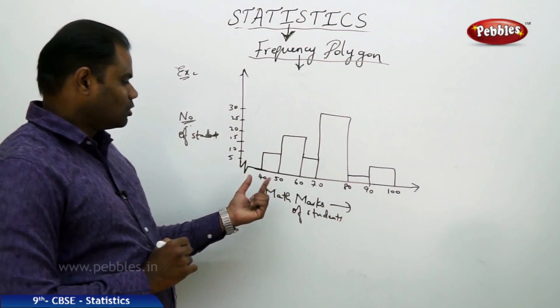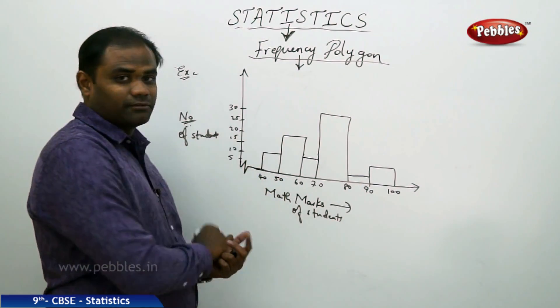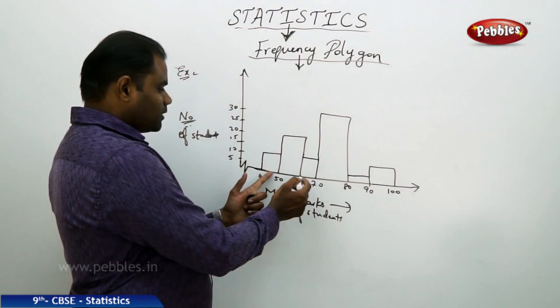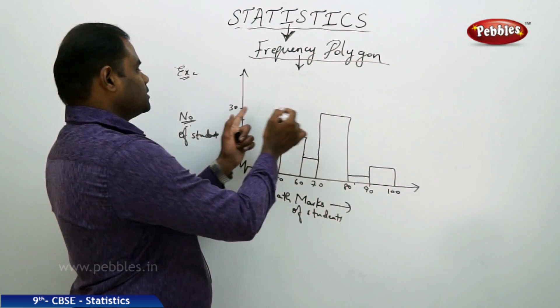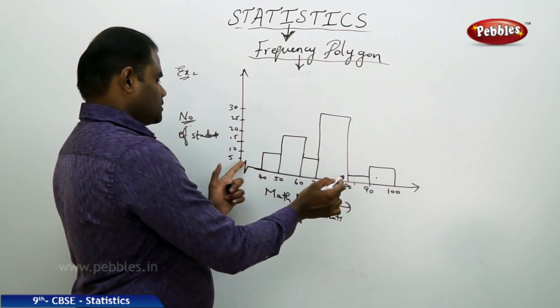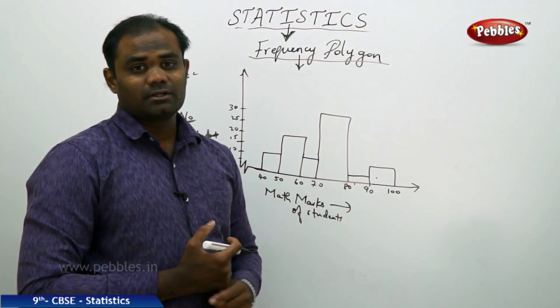So the students who got the marks between 40 and 50 is 10, that's how we understand the frequency table. And who got 50 to 60 is 20, and 60 to 70 is 10, 70 to 80 is 30, 80 to 90 is 5, 90 to 100 is 10. So that's how we understand the frequency polygon.